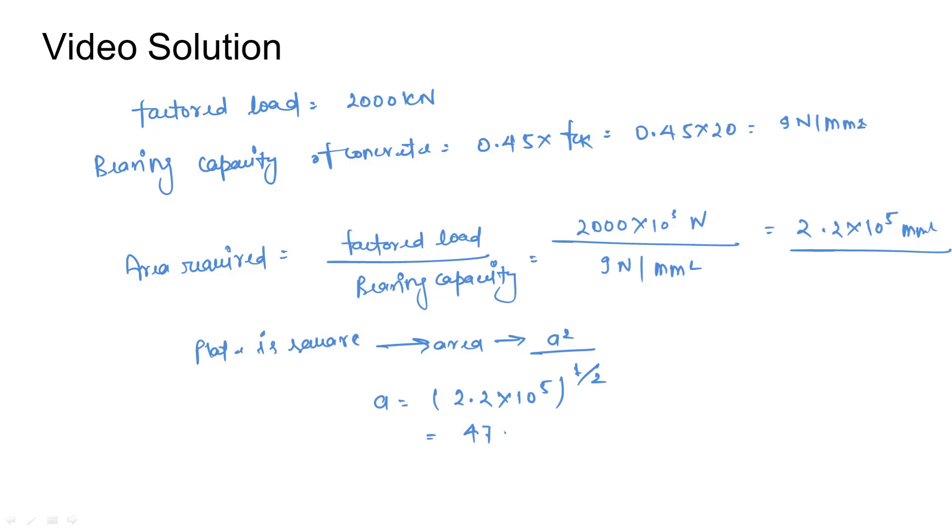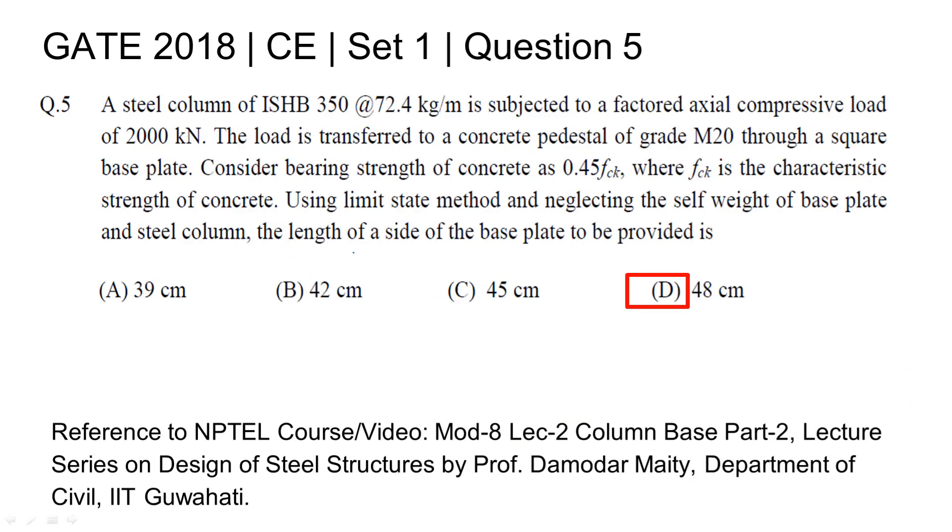So if you solve it, we will get 471.40 mm, which we can also write as 47.1 cm. So we can write a plate of 48 cm is appropriate. So length of the side of the base plate to be provided is 48 cm. So 48 cm is our answer.